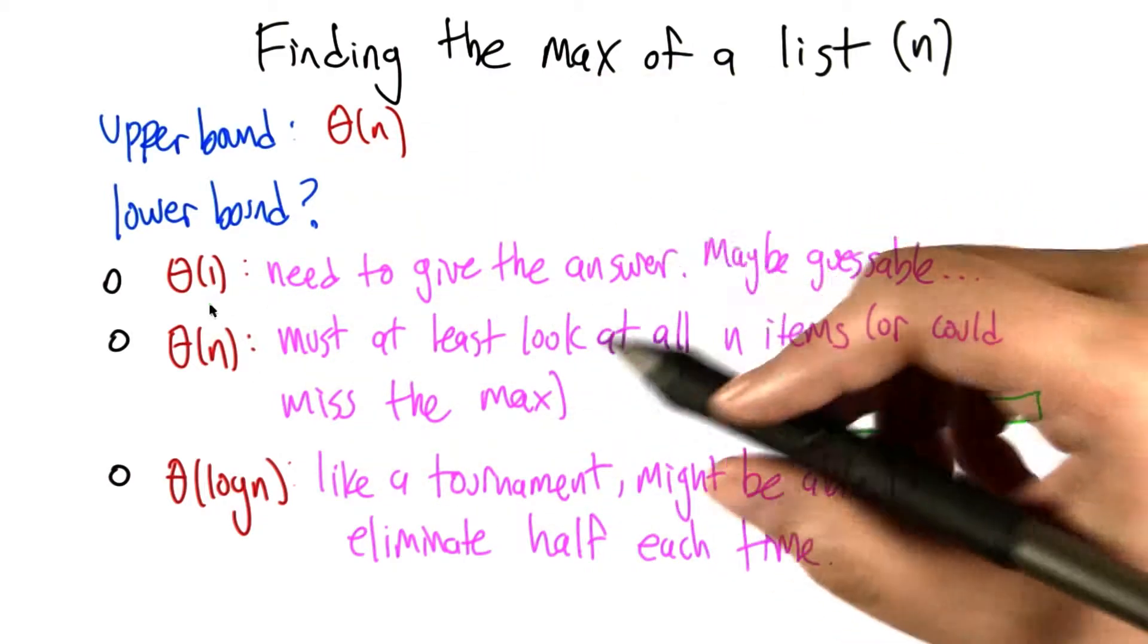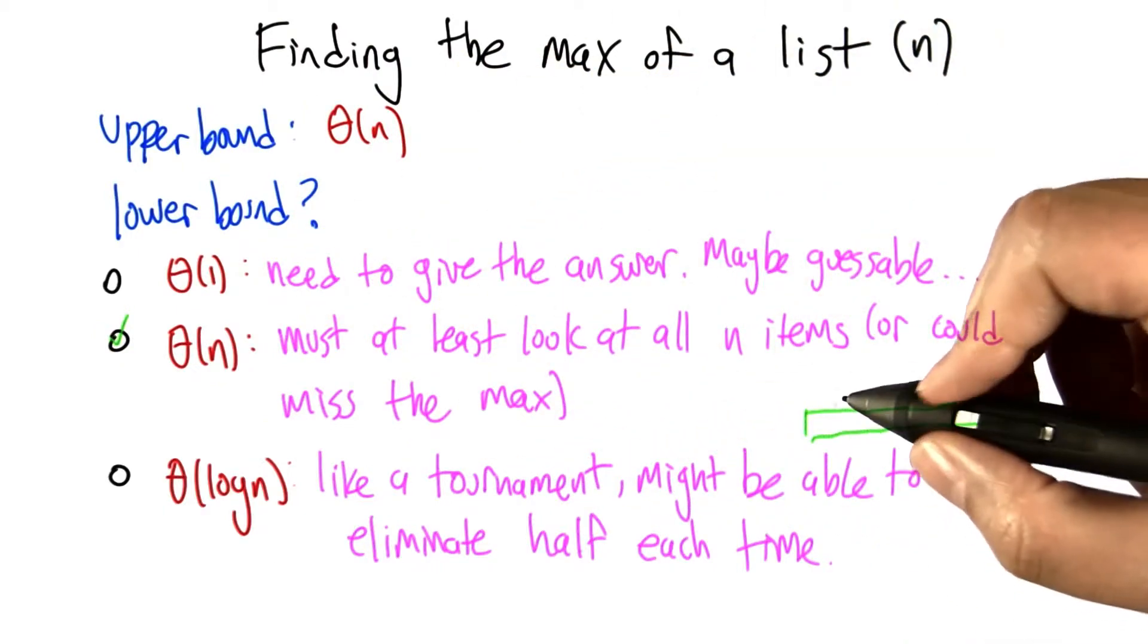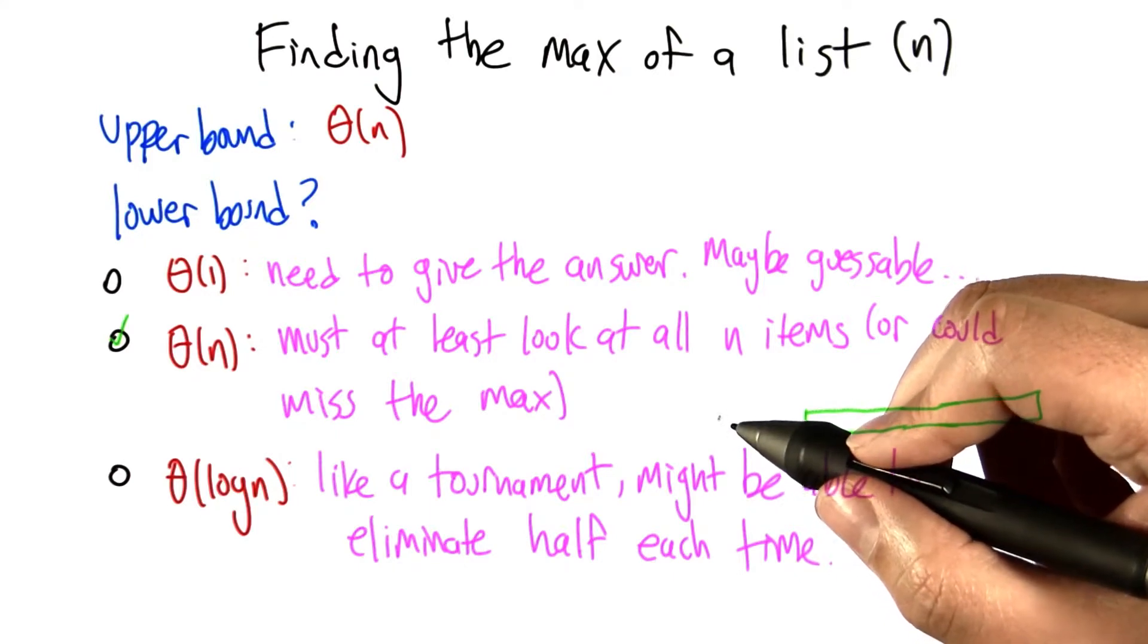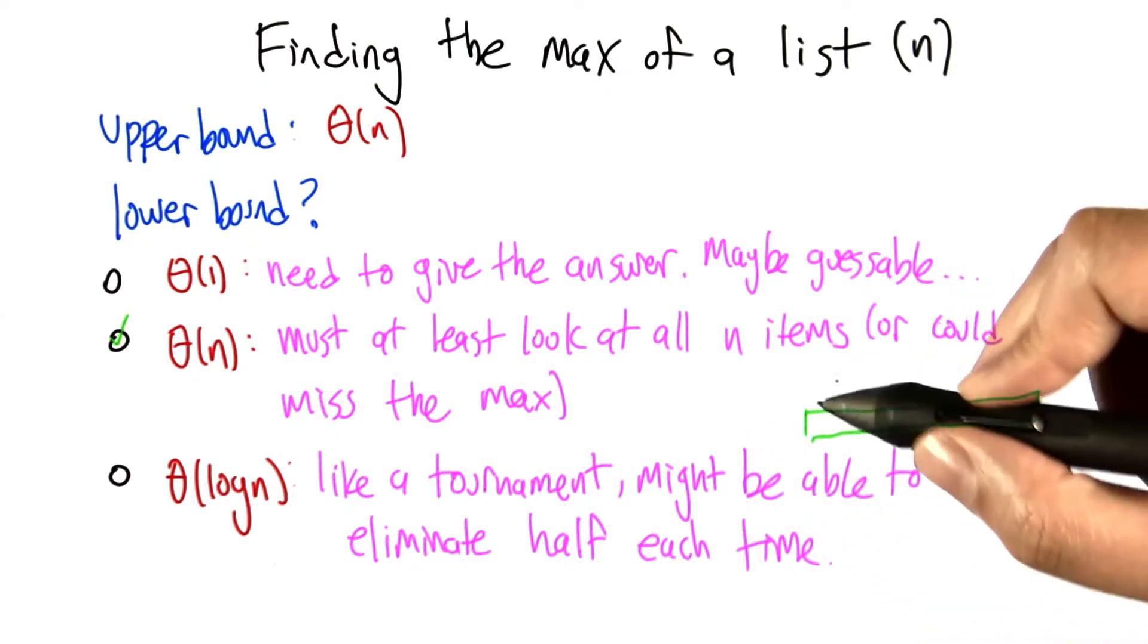This big theta of n argument is actually correct. And just to kind of spell it out for you, imagine we've got an algorithm that runs faster than big theta of n. So that means it can't possibly look at every element in the list.